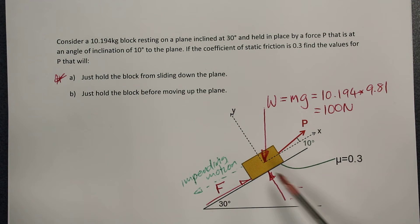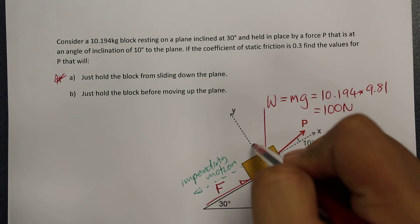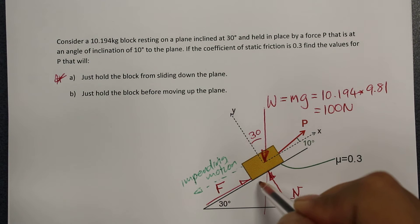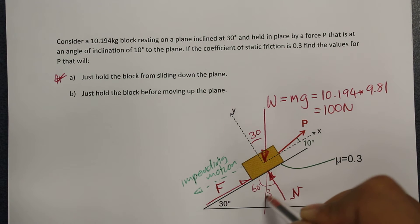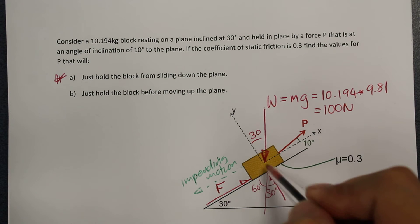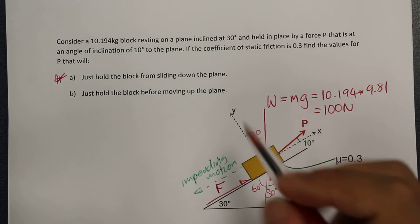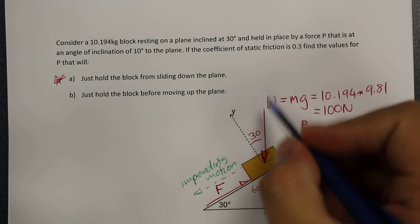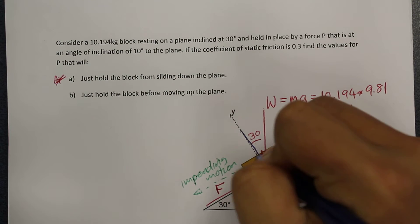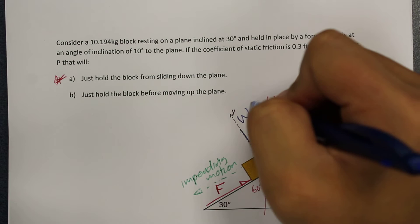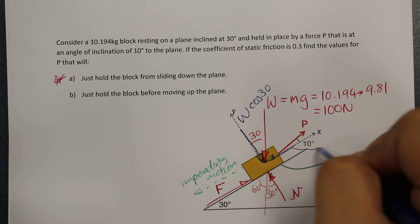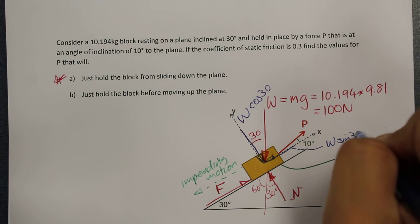So now this is our free body diagram. We can see that the weight force can be broken up into two components. There is an angle of 30 degrees here; if this angle is 30 degrees, that means this angle here is 60 degrees, making this angle here 30 degrees. So the weight force has a component along the x direction equal to W times sine 30, and a component along the y direction equal to W times cosine 30.